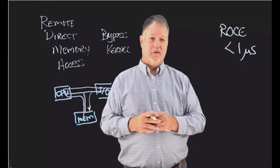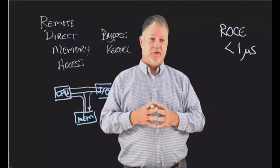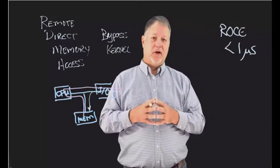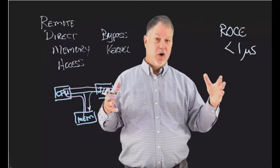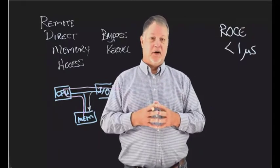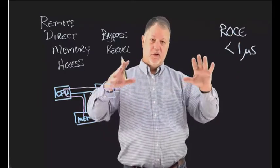The challenge with RoCE is because it runs over that converged Ethernet network, it requires a special network configuration. And typically, converged Ethernet environments don't scale very well. Once you get past about two hops, you have to start doing really special things in your network environment. So we recommend that if you're going to deploy RoCE, you limit it to one to two hop type environments.